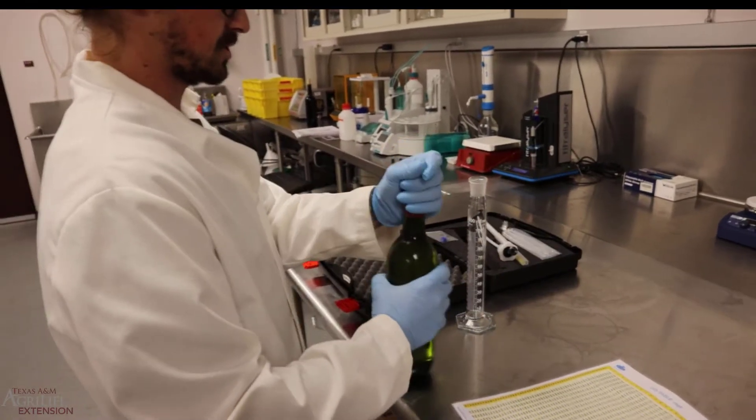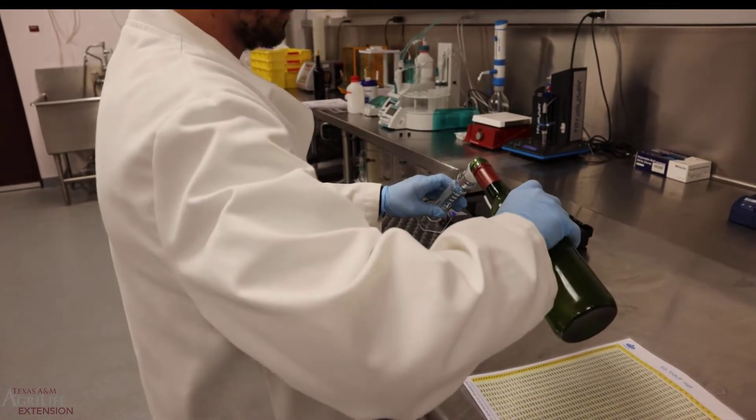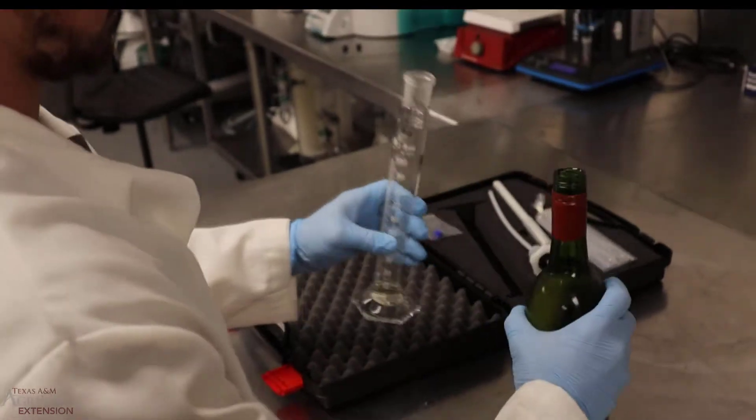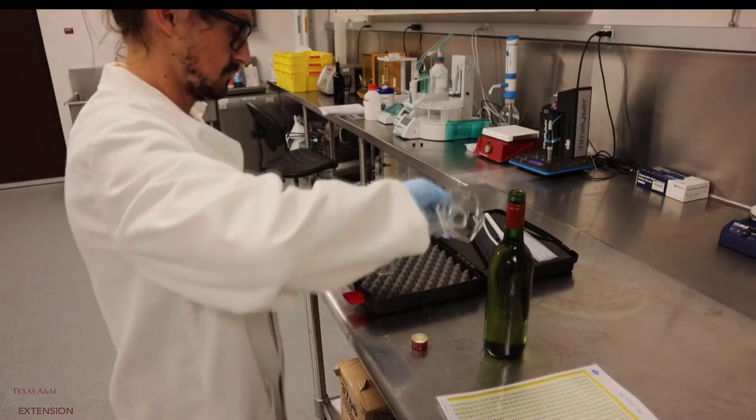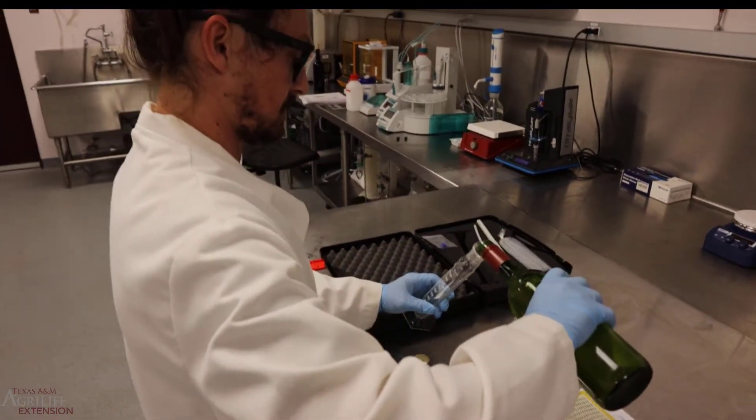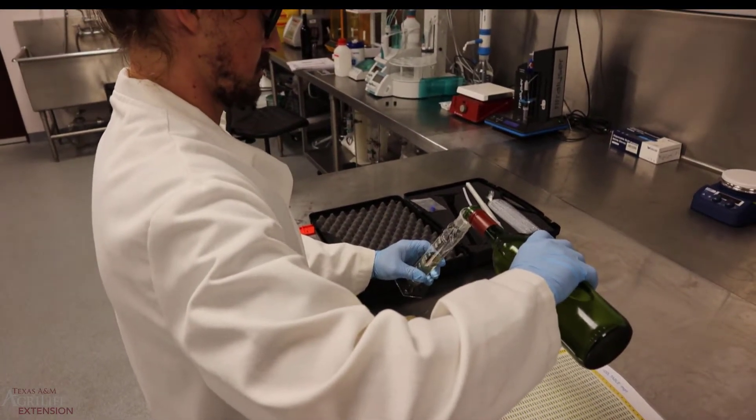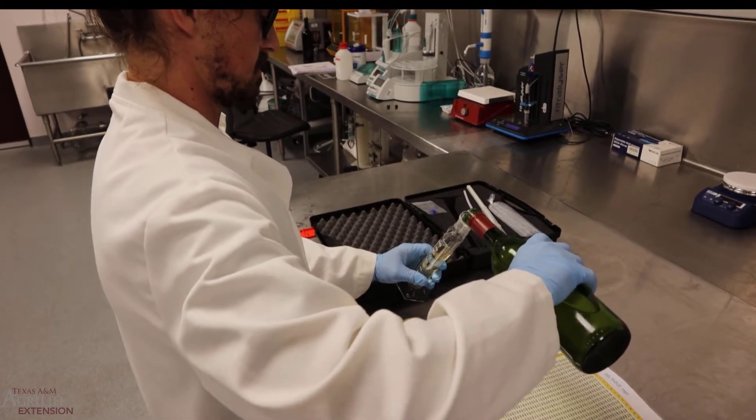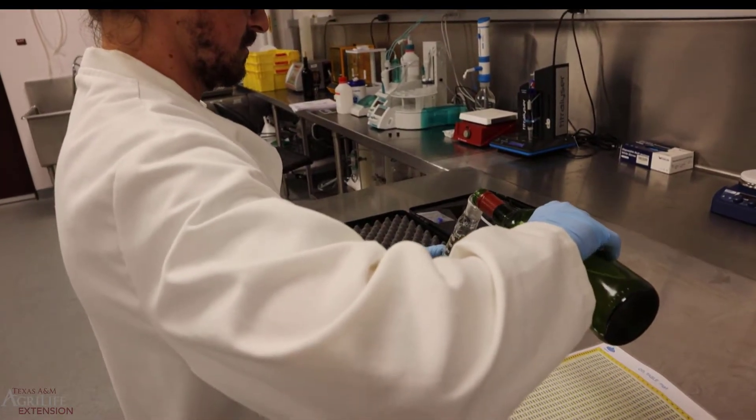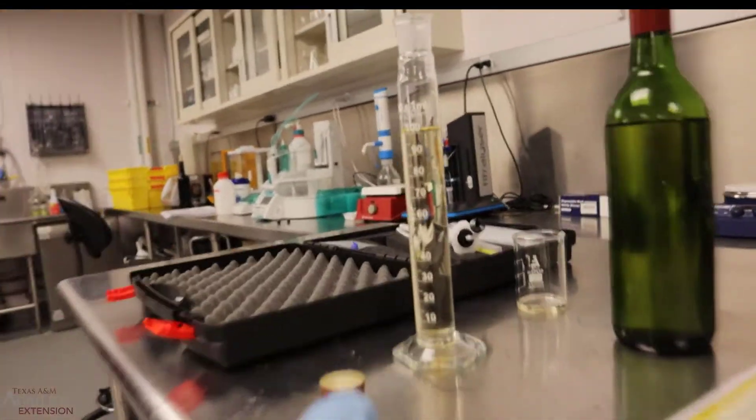Alright, so we'll start out with our chilled sample. We'll gently pour this into the cylinder. We will give our sample a rinse and then once again we'll gently fill this up to the 100 ml mark. If you exceed the 100 ml mark, use a pipette to remove any wine that you need to get out of there.